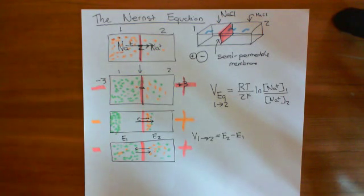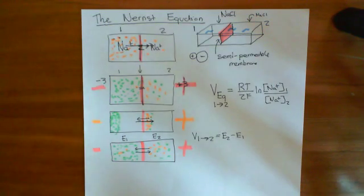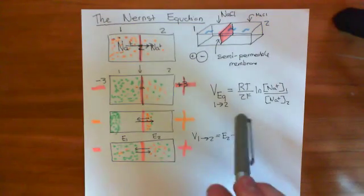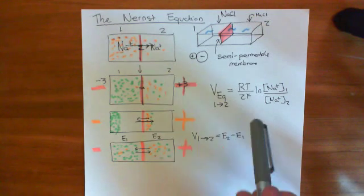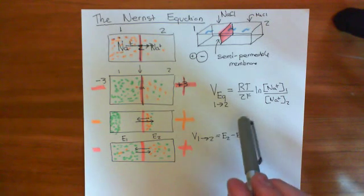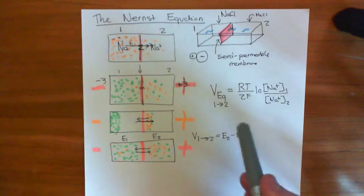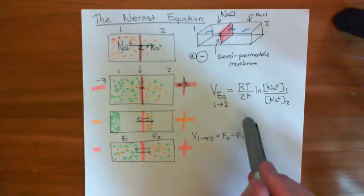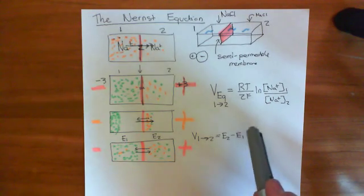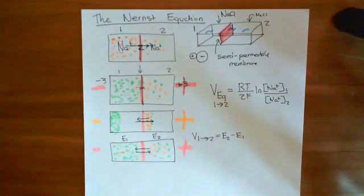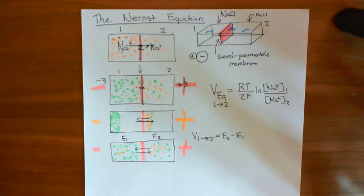Welcome to this next video in the playlist on voltage-gated ion channels. In this video, what we're going to do is attempt a derivation of the Nernst equation. There's going to be some prerequisite knowledge for this video. Firstly, I'm going to need you to be familiar with the concept of a probability density function.